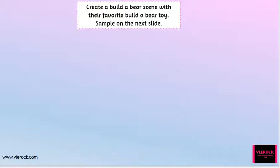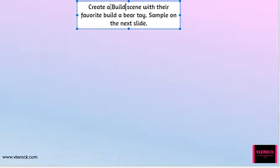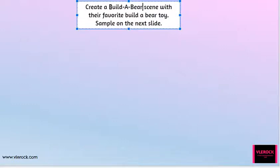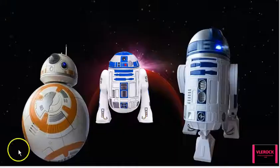What they do is they choose the character. I always keep spotting the mistakes at the end. They're going to create a background scene, and you can just have them search an image for the type they picked. He really likes space, so he chose the R2D2 to be the Build-A-Bear. Then they can insert it and put the background scene.